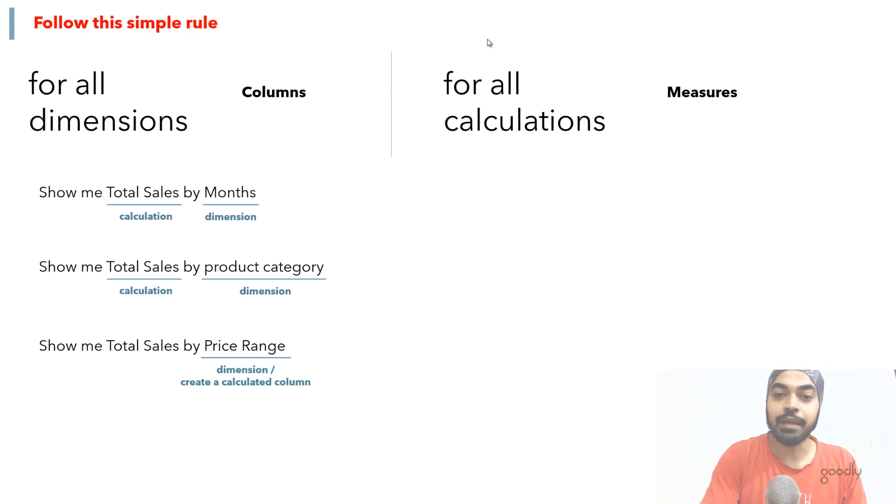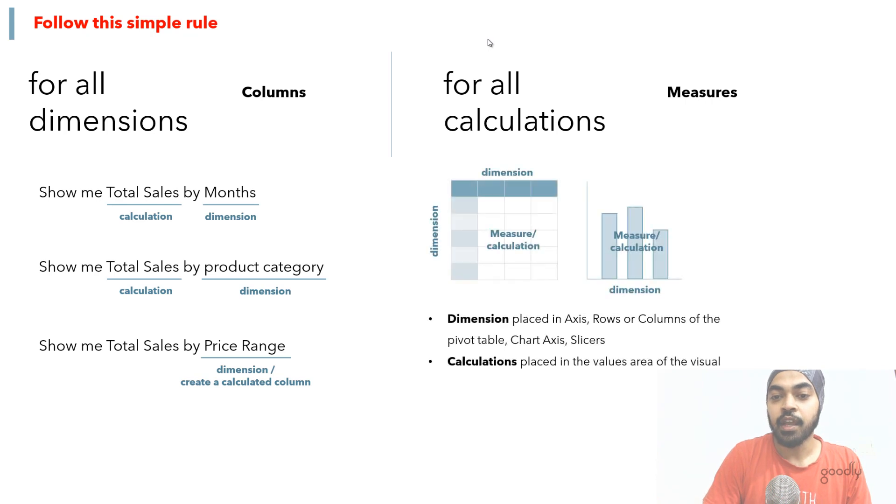Now the other way to think about dimensions as well as calculations is this: whenever you are creating a pivot table or like a chart or something, all the dimensions actually go in the axis. So take a look at this pivot table - the dimensions are there in the rows of the pivot table or the dimensions are there in the columns of the pivot table. So if you actually want to drag something in the rows or columns of the pivot table, or perhaps drag something in the axis of the chart or maybe in the slicer, you will actually create a calculated column. The measures cannot be dragged in the rows or columns or the axis of the chart, and whatever you put in the value section of the pivot table or in the chart, that all is nothing but a measure.